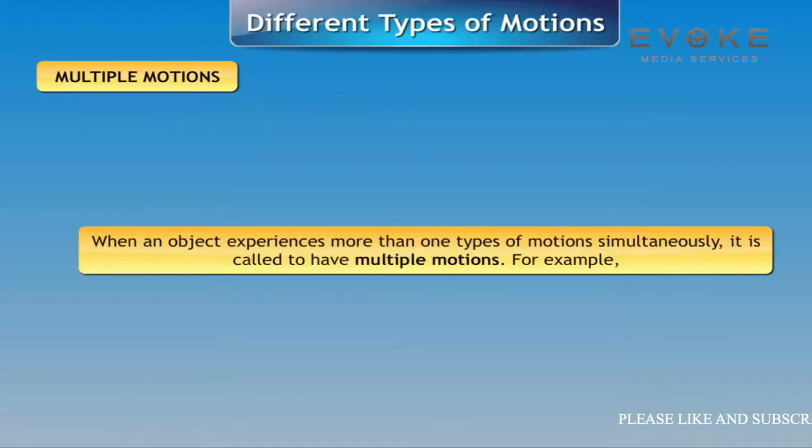Multiple motions: When an object experiences more than one type of motion simultaneously, it is said to have multiple motions.